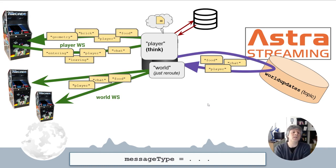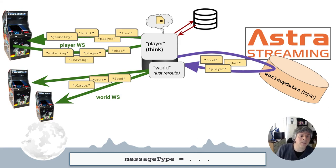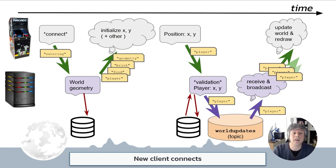There are different message types in this game. Besides player position, there are messages conveying the geometry of the game world — obstacles and food items. There are control messages like 'I'm entering' or 'I'm leaving' the game, and chat messages, because there is also an in-game chat. Every message type has a different shape and goes through different routes in the architecture. You are welcome to explore the code and find the various places where these messages are created, handled, and received on both client and server.